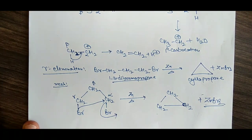If this carbon is called the alpha carbon, this is the beta, and this is the gamma. Therefore, the loss of Br takes place from the gamma carbon. That is combined with the zinc, and when heated we get zinc bromide as a side product and cyclopropane as the main product. That is why it is called the gamma elimination reaction.